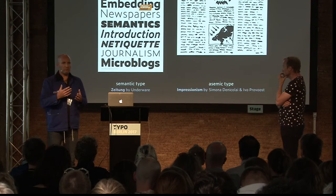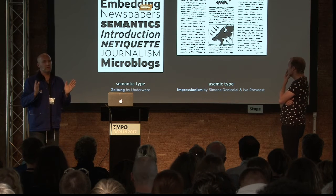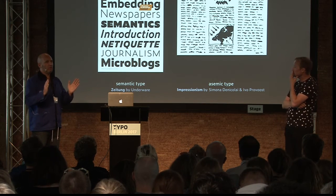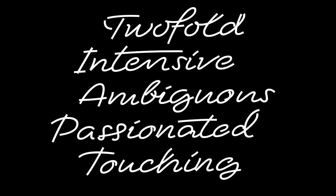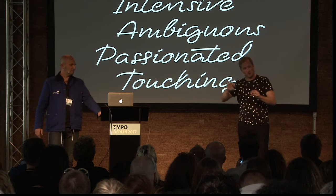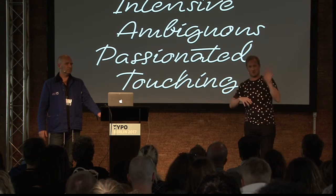Duos is a lot about communication and the way people communicate with each other using language. If you look at all possible ways to use written language, they are always defined by two extremes: the semantic type and the asemic type. Asemic type is writing without letters. Duos is somewhere in between — of course it's very readable, but there's also a kind of playful aspect. This font is based around the skeleton, so it's a monoline script.